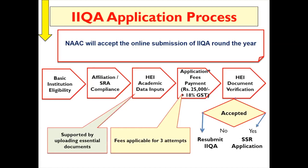After submission, document verification is carried out. If there are any clarifications required, a query is raised and must be responded to within the stipulated time. Based on the clarifications given by the HEI, the IEQ may be accepted or rejected. If accepted, you move on to the next step. If rejected, within one year from the date of rejection you have three attempts to reapply with the same fees — no additional payment is required.